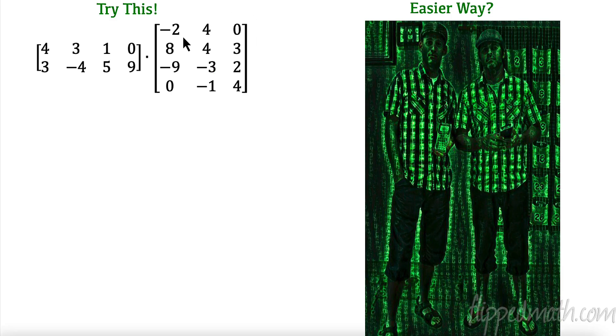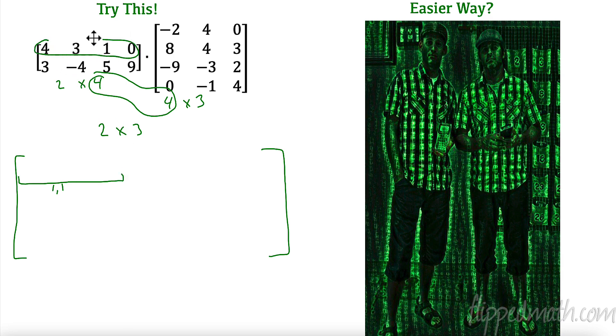Alright. Let's multiply these. So here we go. Let's see. This is 2 rows and 4 columns. Can we multiply? This has 4 rows and 3 columns. So our dimensions here match. So our result is going to be a 2 by 3. Alright. So let's do this. 2 by 3. This is the first component. First row, first column. So first row right here. And first column right here. So 4 times negative 2 is negative 8. And I move to the next one. 3 times 8 is 24. Move to the next one. 1 times negative 9 is negative 9. 0 times 0 is 0.